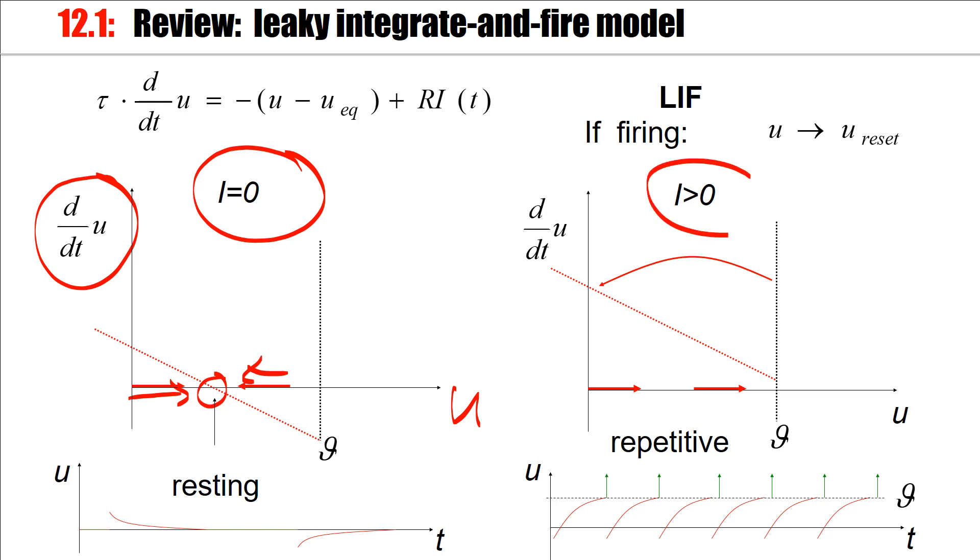If we have a positive but constant current, this curve is shifted upwards, and we have a flux always to the right. It increases the potential until the threshold is reached. And thereafter, we have a reset, and the process starts again, which leads to repetitive firing.